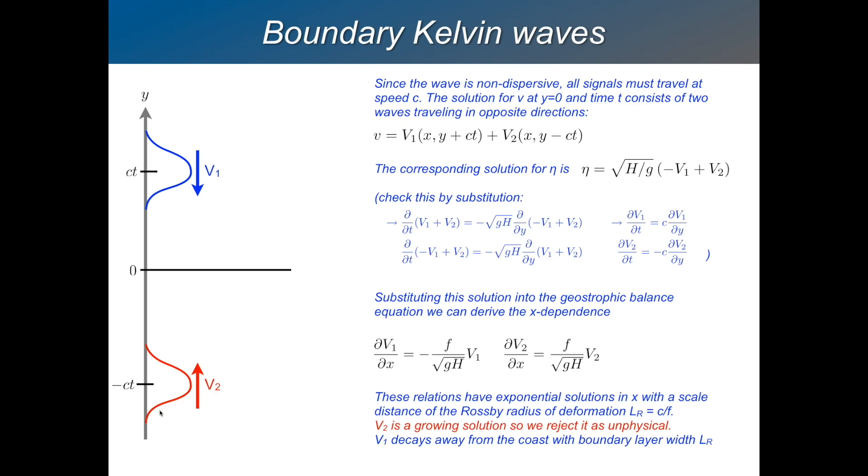Anything at time t, it must consist of the sum of what was a distance c times t away, either to the north or to the south. It must be the sum of those two things. And nothing else, because anything else has either gone too far or hasn't arrived yet, because there's only one speed that these waves can propagate at. And so we say V is the sum of V1 plus V2. V1 is going southwards. V2 is going northwards.